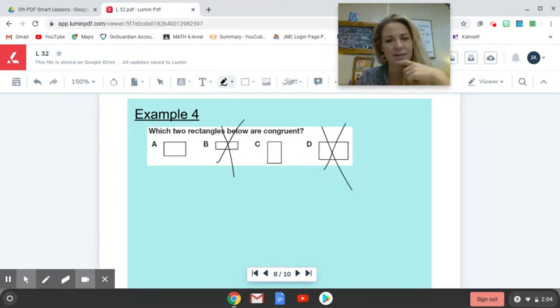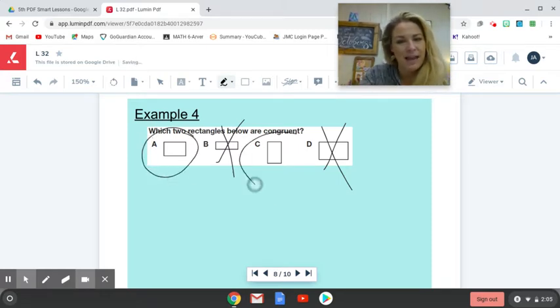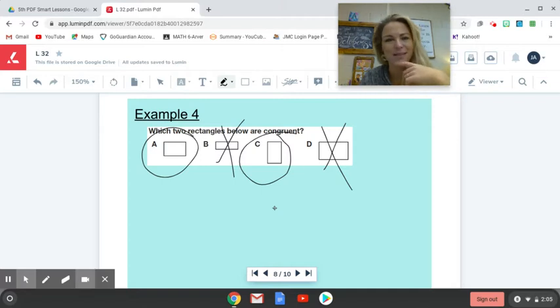As I'm looking at these, to be honest, even these don't look congruent really to me, this one looks a little bit fatter. But if I were to rotate this on the side or rotate this one on its side, I can see how these two would be congruent. So in the end, I'm going to say A and C are congruent.